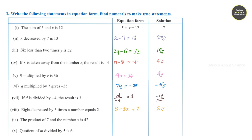Question number 9: the product of 7 and the number h is 42, that is 7h is equal to 42. Solving, h is equal to 6.